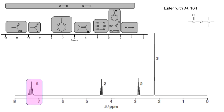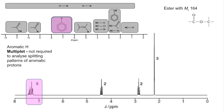The first peak I'm going to look at is this one here. Looking at the data sheet, we've got two options: OH or aromatic hydrogen. Well, OHs always appear as singlets, so it's got to be the aromatic hydrogen. The signal is quite messy — it's certainly not a singlet, doublet, triplet, or quartet, so I'm referring to it as a multiplet. The specification doesn't require you to analyse the splitting patterns of aromatic protons. The area is five, meaning there are five protons in this environment, so we've got a C6H5 group — a benzene ring with one substituent.